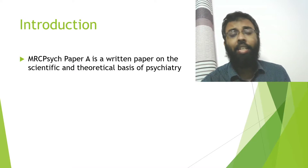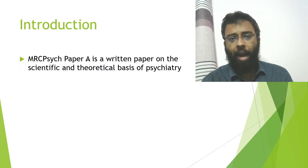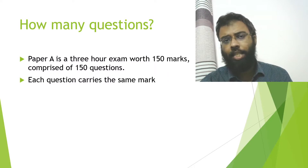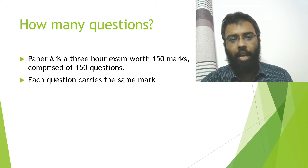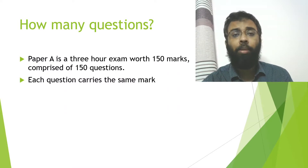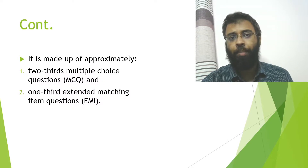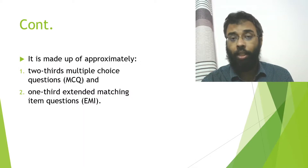MRC Psych Paper A is a written exam about the scientific and theoretical basis of psychiatry. There will be 150 questions, each carrying one mark, and the exam will be three hours long. The contents are divided approximately into two parts: two thirds will be multiple choice questions and one third will be extended matching items.